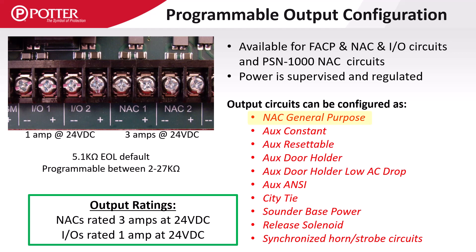NAC General Purpose is a reversing polarity notification appliance circuit that does not include synchronization. A circuit programmed as this output type is best suited for a device like a 24-volt bell. When set for AUX constant, the circuit provides uninterrupted 24-volt DC auxiliary power. AUX resettable is a constant 24-volt DC output that momentarily turns off when the panel is in a reset cycle.